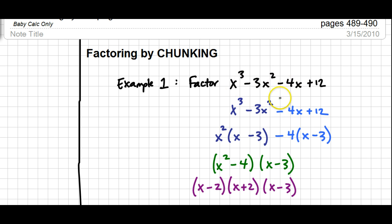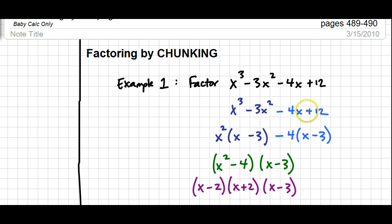We're going to chunk it — cut it into two halves. I'm going to find the GCF for the part rewritten in dark blue and the part in light blue. For x³ minus 3x², the GCF is x², and then I find what's left. This is just a mini GCF factoring. We do the same thing for 4x and 12.